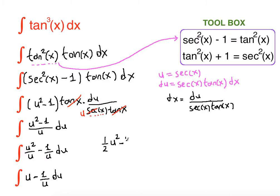Now we're going to bring u back. What was u? u was secant x. So we're going to rewrite it as one half secant squared x minus ln of secant x plus c. This is the final answer.